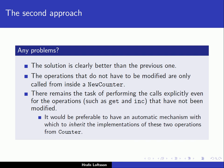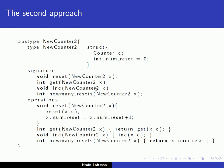This solution is clearly better than the previous one because we're able to use some part of the code that has already been implemented. Operations that do not have to be modified are only called from inside new_counter. We didn't modify the get function — we just called get with a value of type counter. Same for increment. So instead of re-implementing it, we use the code that had already been written.